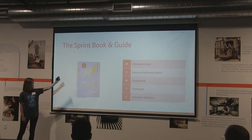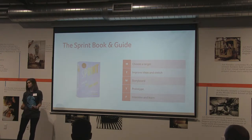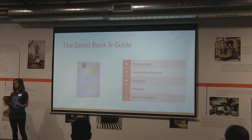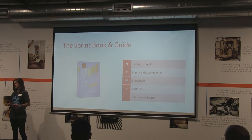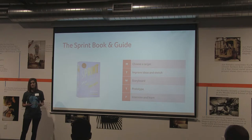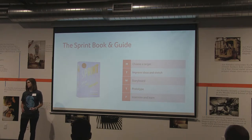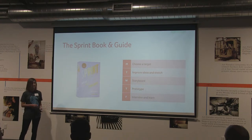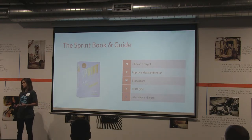The process looks like this, Monday through Friday. Monday you choose a target — everybody hashes out what to zero in on for the rest of the week. Tuesday you take all those ideas, improve them, refactor them, and start the sketching process. Wednesday is all about the storyboard — you pick the best idea from all those sketches and make a storyboard that becomes your prototype on Thursday.